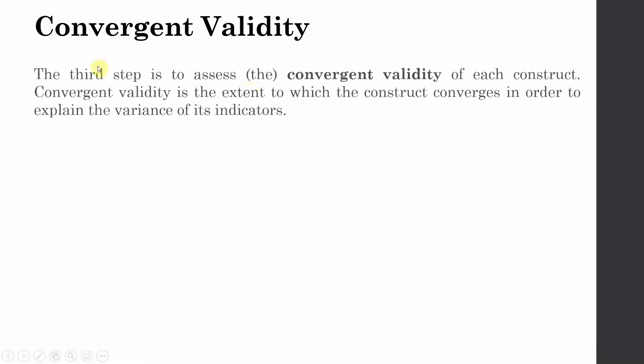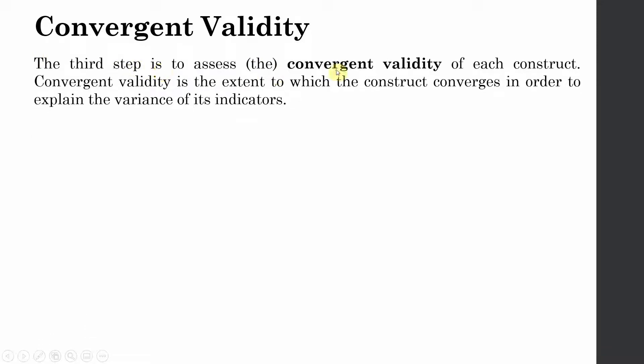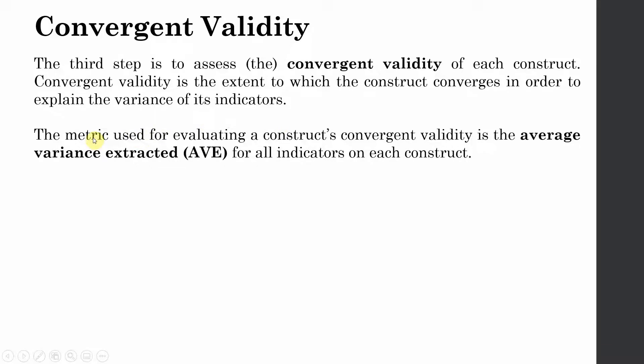Next in measurement model assessment for reflective measures is convergent validity. Now that we have assessed the reliability, the next step is to assess the convergent validity. Whether or not all the items that are measuring a particular construct converge to represent the underlying construct. Convergent validity is the extent to which the construct converges in order to explain the variance of its indicators or in simpler terms whether the indicators are representing the underlying construct or not.